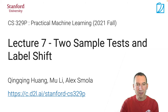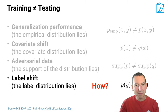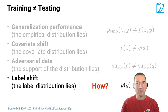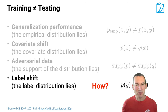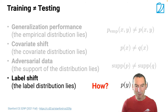Welcome to lecture 7. This is a lecture about two-sample tests and label shift. Previously we looked at generalization performance and how the fact that our test distribution isn't quite the same as the empirical distribution we train on affects the discrepancy between training error and test error.